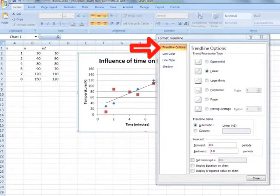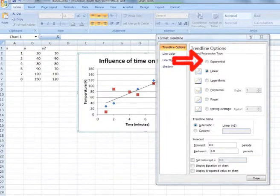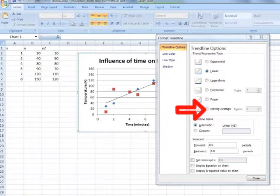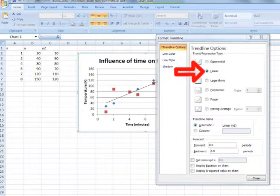Now there are various trendline options to choose from: Exponential, Linear, logarithmic, polynomial, power, and moving average. We are expecting these data points to fall on a linear line, so therefore we are selecting Linear.